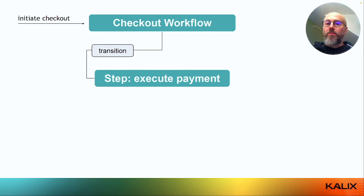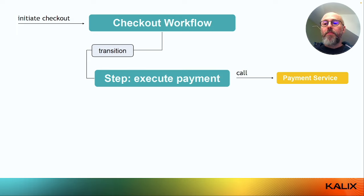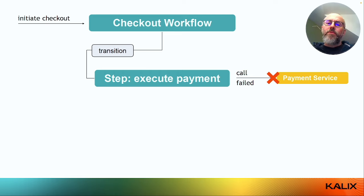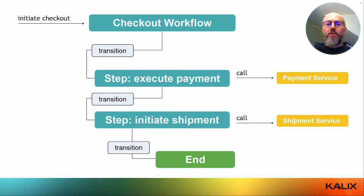The workflow is initiated and the first transition moves to the execute payment step. Kalix moves the workflow to that step, which calls some payment service to execute the payment. If that call fails, the workflow retries. By default it will retry forever with intervals to avoid overloading your systems, but you can configure a limit — for example, retry a maximum of three times. Let's say it fails the first time and then passes; I will retry and then it passes. I then transition to initiate shipment, which calls the shipment service. This call returns successfully, then I transition to the end of my workflow.